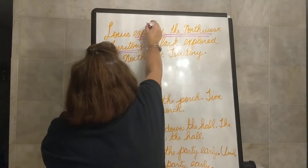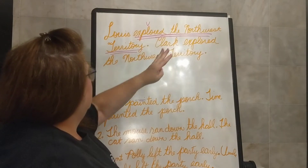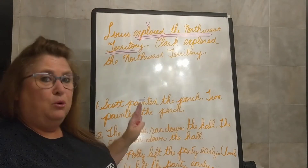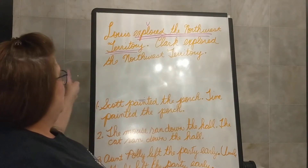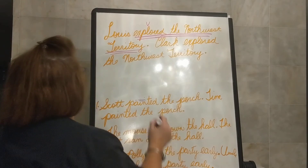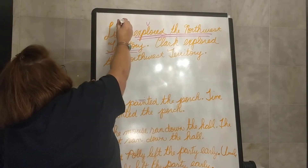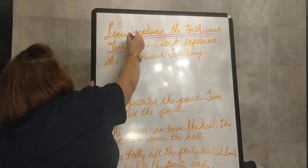Just our verb is explored, but the whole predicate part of the sentence is explored the Northwest Territory. Who or what explored the Northwest Territory? Well, Lewis did. So Lewis is our subject.